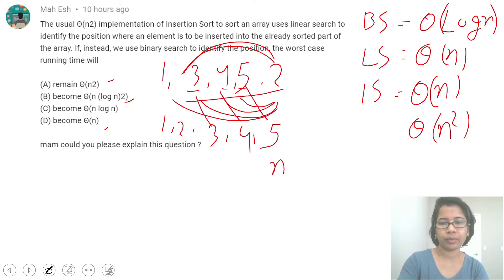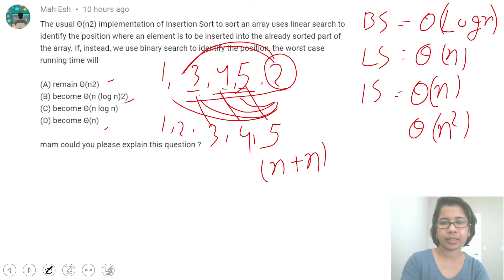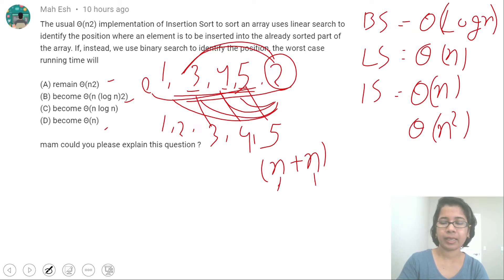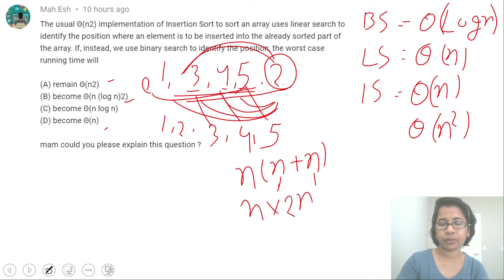For shifting the rest of the elements, that will also take n. So it is n plus n for one element. In the worst case scenario, you search up to the first element, which takes n. First n is for searching, second n is for shifting — so 2n for one element. And there are n elements, so n × (n + n) = n × 2n = 2n². Running time will be theta(n²). This is in the case of linear search.